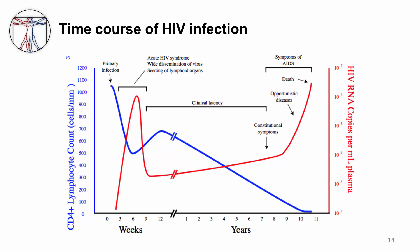AIDS is a devastating illness. In other parts of this module, we will discuss in more detail how CD4 count and HIV viral load can guide treatment and prophylactic decisions, and what specific opportunistic infections and malignancies can occur at various phases of the disease. Thank you for your attention.